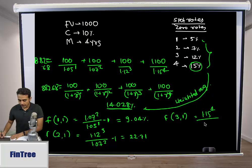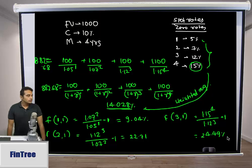And the last one, forward rate after three years for one year, is (1.15^4)/(1.12^3) - 1 = 24.49%. These are your forward rates.